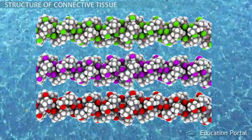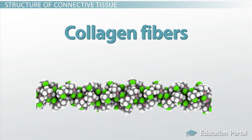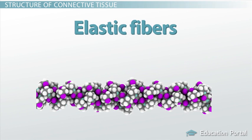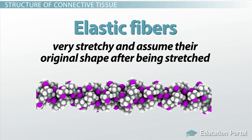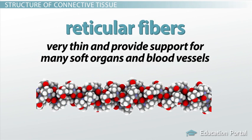There are three types of protein fibers found within the matrix. Collagen fibers are very strong and provide flexibility. Elastic fibers are very stretchy and assume their original shape after being stretched. Finally, reticular fibers are very thin and provide support for many soft organs and blood vessels.